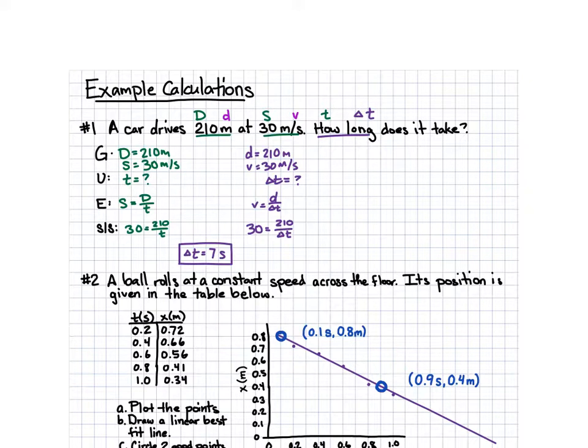Okay, here we go. First thing, a car drives 210 meters. What's 210 meters? That's a distance. Good. So write D for that. At 30 m/s, what's that 30 meters per second? That's a speed. Tricky one. How long does it take? What does how long mean? That's time. And you're like, how long? That's a length. Well, yeah. But usually in this class, if I say how long, I'm talking about a time, not a length. Sound good?